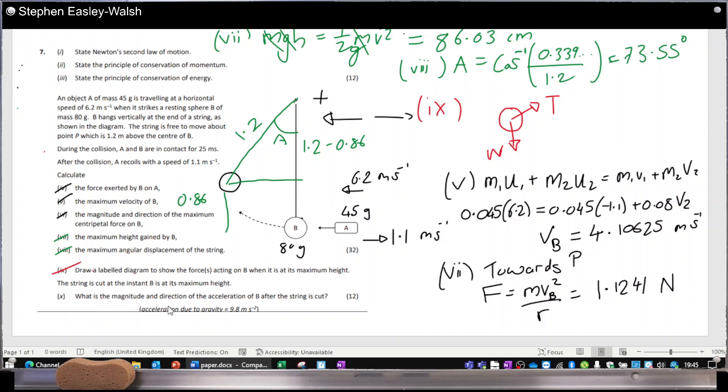What is the magnitude and direction of the acceleration of B after the string is cut? Okay, well the string is cut, so its acceleration is downwards at 9.8 meters per second squared.